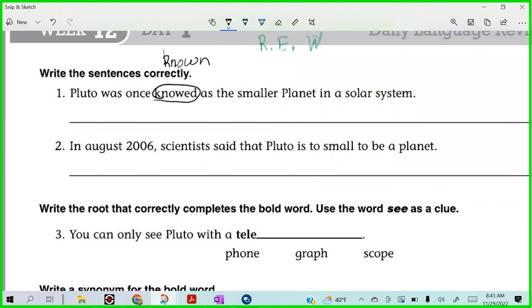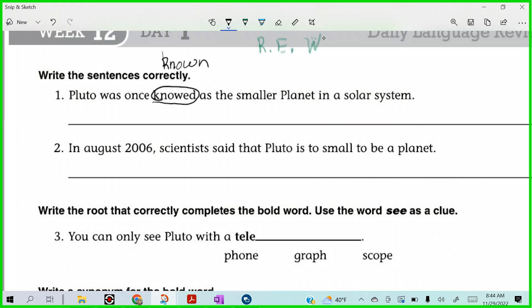Pluto was once known as the smaller planet in a solar system. Now, if we're comparing one thing to many, is that comparative or superlative? Harper? When you compare one thing to just another thing, that's comparing two. When you compare one thing to many, that would be superlative. Alright, so what is the superlative ending? Anybody know? It shouldn't be smaller. What should it be? Smallest, right? So, Pluto was once known as the smallest. Spell it for me.